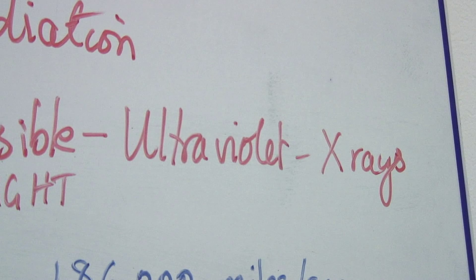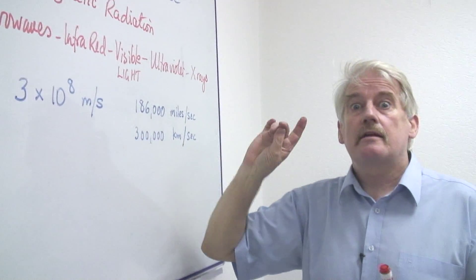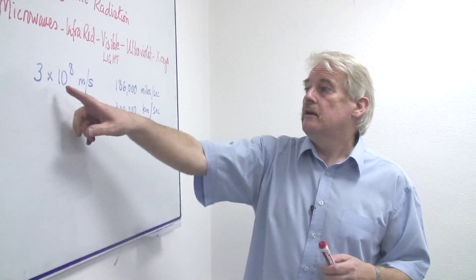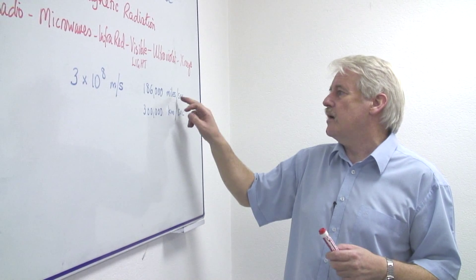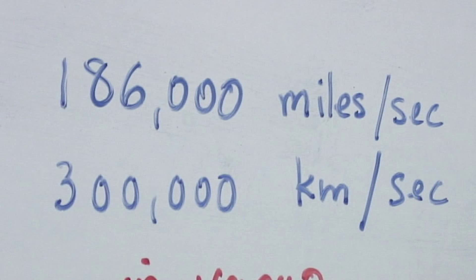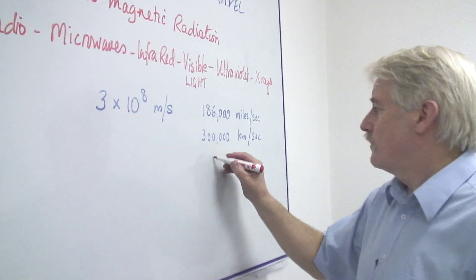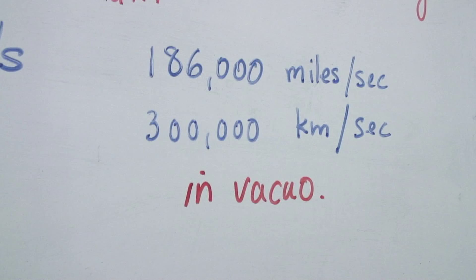So we have many types of electromagnetic radiation and the similarity between them is the speed. The speed of electromagnetic radiation is always 3 times 10 to the 8 meters per second or 186,000 miles a second or 300,000 kilometers a second in vacuo. That means in a vacuum.